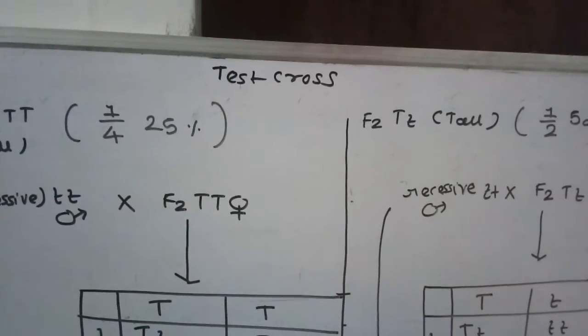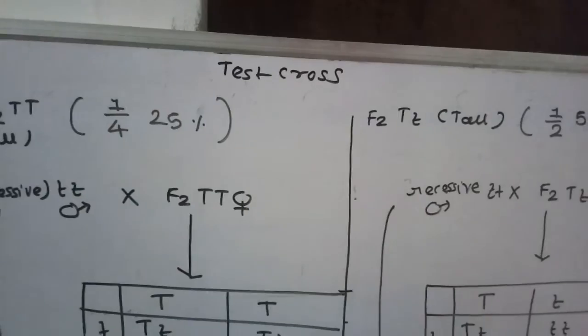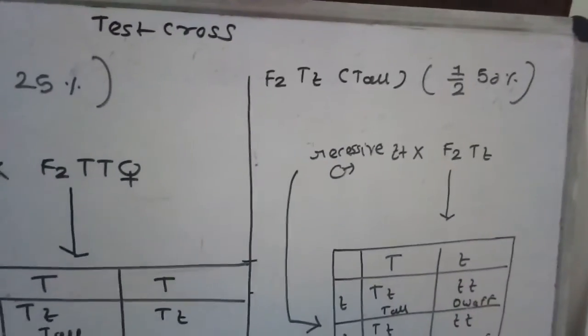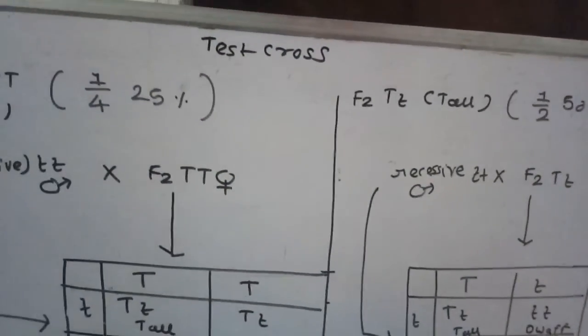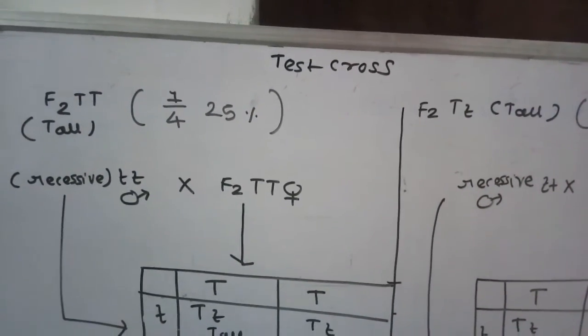In 1 to 1 proportion, after the test cross we can determine whether the organism we tested is homozygous dominant or heterozygous dominant.